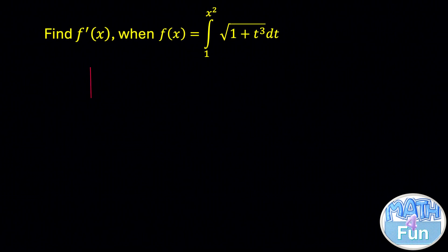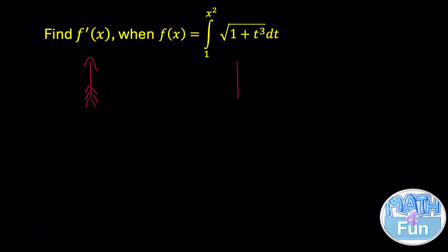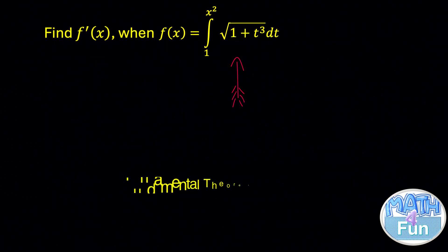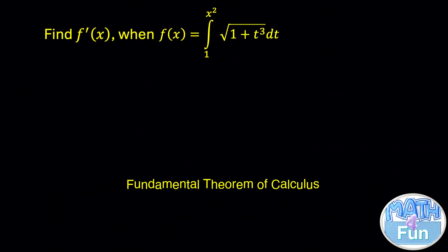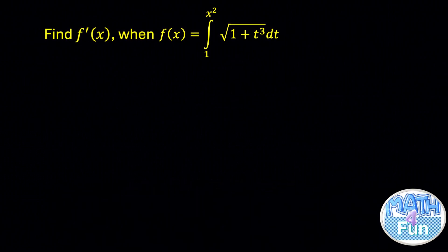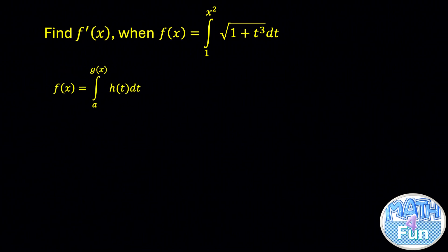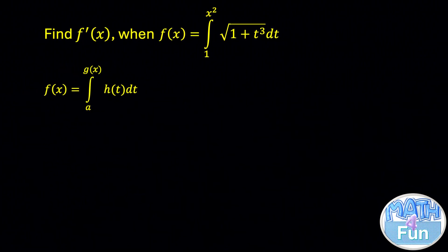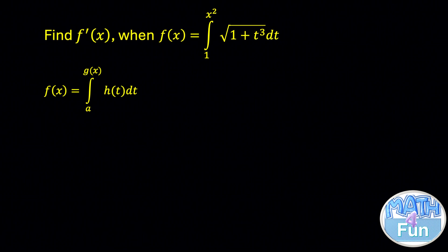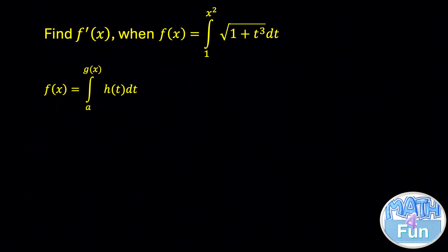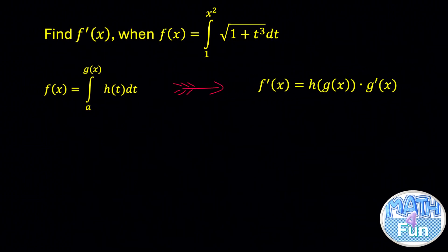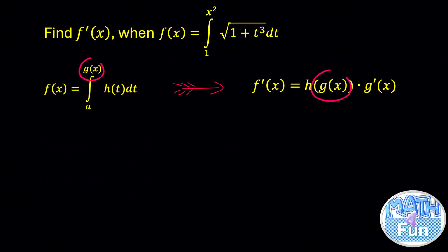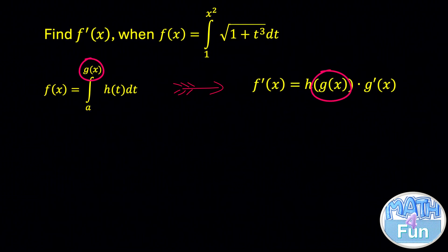To find f prime, given f of x equal to the integral from 1 to x squared of radical 1 plus t cubed dt, we can use the fundamental theorem of calculus. According to this theorem, if f of x is equal to the integral from a to g of x of h of t dt, where a is a constant and h of t is a continuous function, then f prime of x is equal to h of g of x times g prime of x.